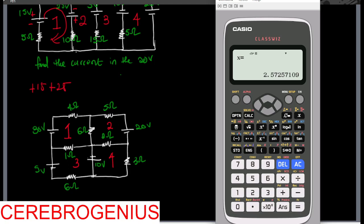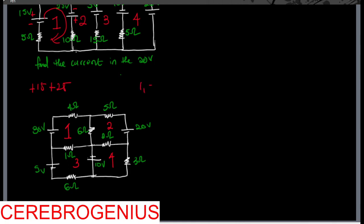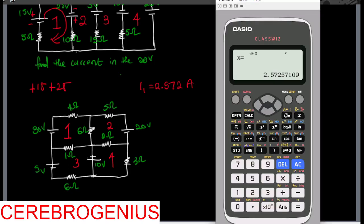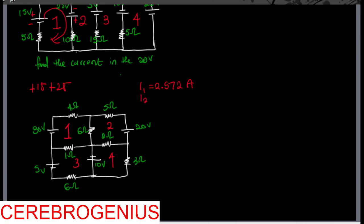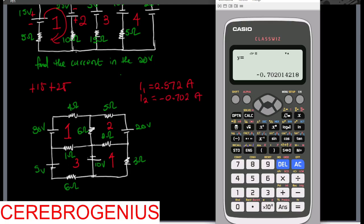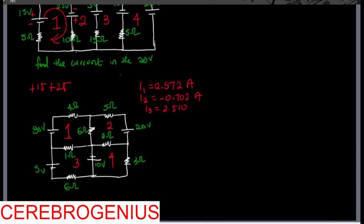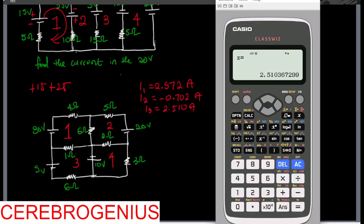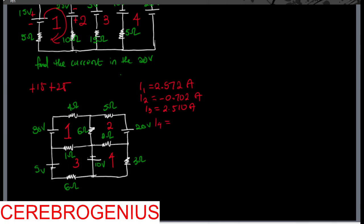So the results are: I1 is 2.572 Amperes, I2 is minus 0.702 Amperes, I3 is 2.510 Amperes, and I4 is minus 2.28 Amperes.